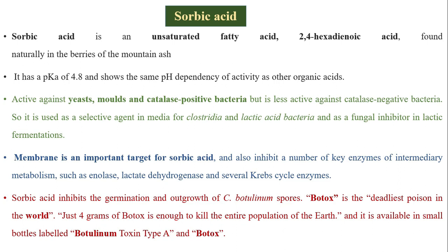Sorbic acid (2,4-hexadienoic acid) is found naturally in the berries of the mountain ash. It has a pKa of 4.8 and shows the same pH dependency of activity as other organic acids. It is active against yeasts, molds, and catalase-positive bacteria, but is less active against catalase-negative bacteria such as Clostridium and lactic acid bacteria. Sorbic acid is also used as a fungal inhibitor in lactic acid fermentation.